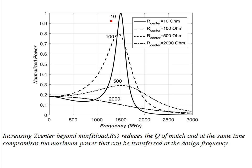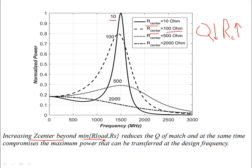Comparing Z_center = 10Ω with Z_center = 100Ω: the bandwidth increases and Q decreases as Z_center increases. Increasing Z_center beyond the minimum of RL and RS reduces the Q of the match and simultaneously reduces the maximum power that can be transferred at the design frequency. This tradeoff becomes clearly visible in the simulation at Z_center = 500Ω.